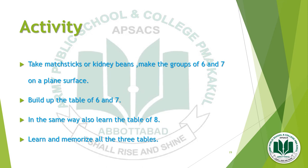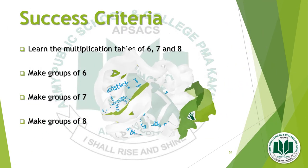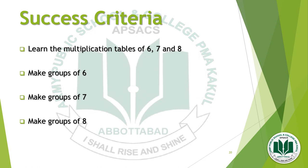Here is an activity for you: take some matchsticks or kidney beans and make groups of 6 and 7 on a plain surface or board. Build up the tables of 6 and 7 by making groups, and in the same way you can also learn the table of 8. Then learn and memorize all three tables. Success criteria: learn the multiplication tables of 6, 7, and 8; make groups of 6; make groups of 7; and make groups of 8. Thank you and Allah Hafiz.